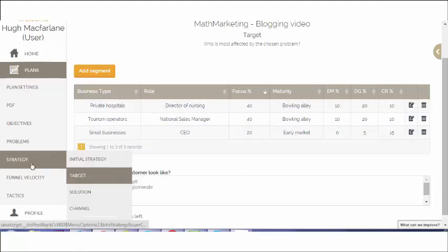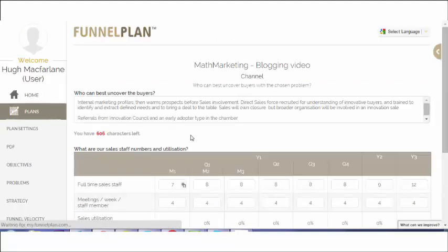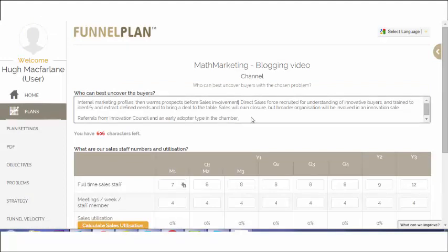So let's take a look at the channel strategy we're going to build to reflect that. Two elements of channel strategy. One is very simple and that's just the articulation of the channel. Who are we going to sell to? Now take a look at what we've written here. Internal marketing profiles, that's really just describing an internal role, then warms the prospect for sales involvement. Direct sales force recruited for their understanding of innovative buyers and trained to identify and extract needs and to bring a deal to the table. Think about that. That's a visionary salesperson.